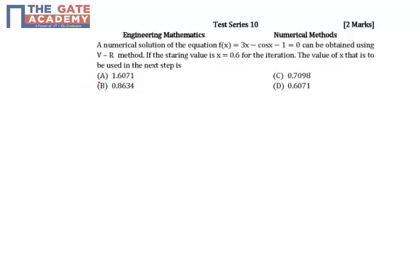This question is from numerical methods. The value of f of x that is given as f of x is equal to 3x minus cos x minus 1 is equal to 0.